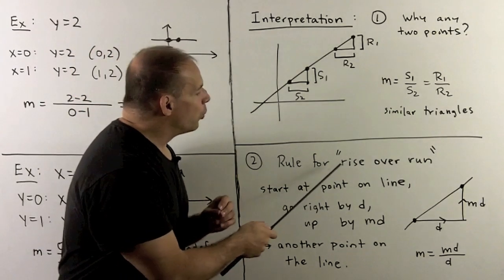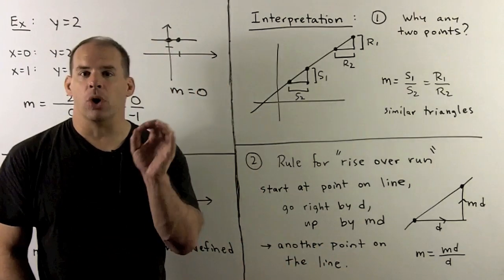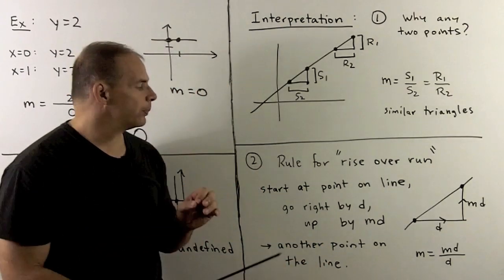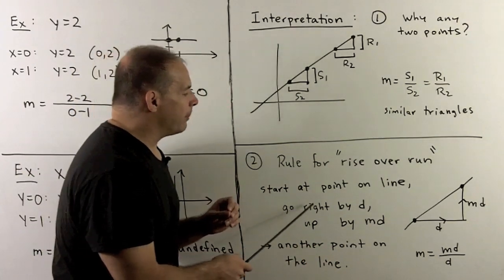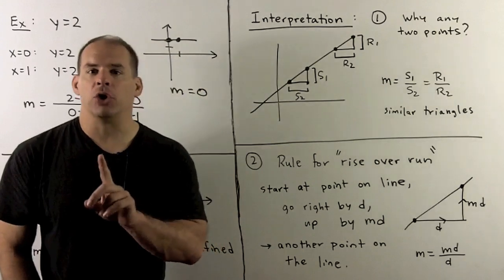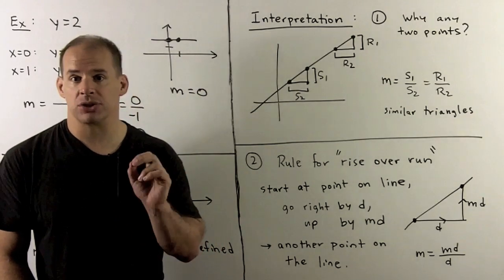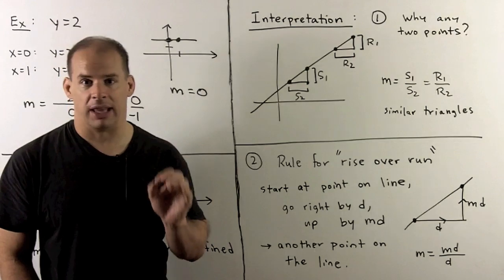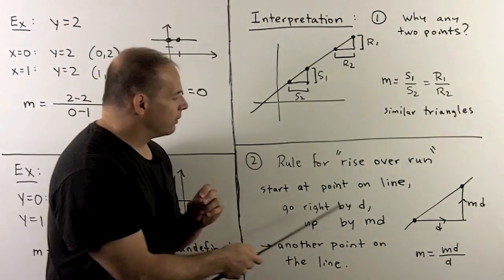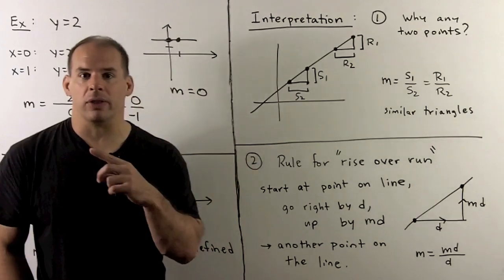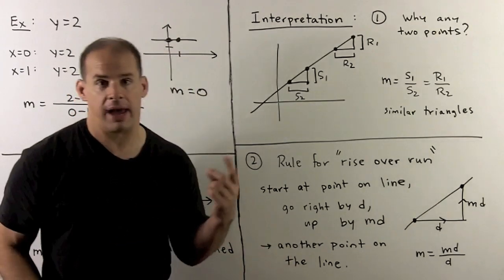We note a rule for getting points on a line if we know one point and the slope. If I have a point on the line and I go to the right by d, then I go up by m times d, where m is the slope, and that gives me another point on the line. Note: if d is negative, going to the right really means going to the left; if m times d is negative, instead of going up we go down.